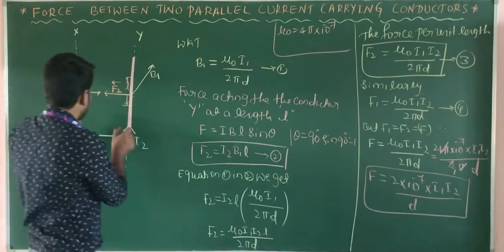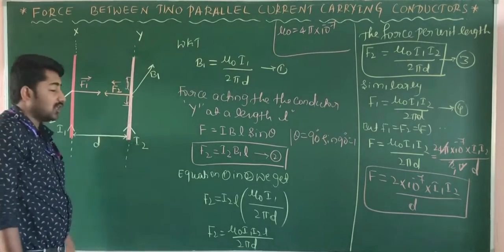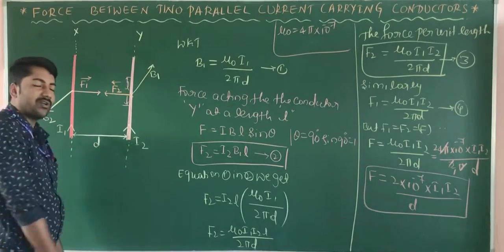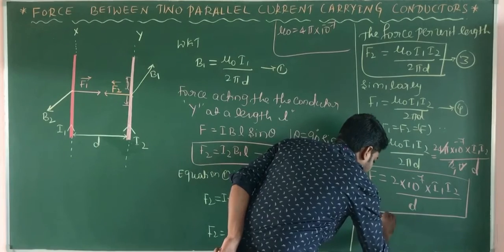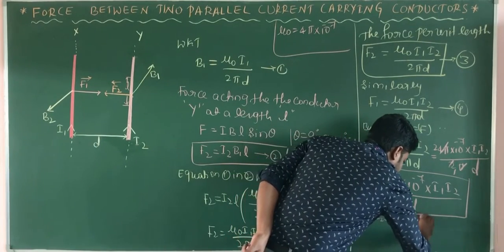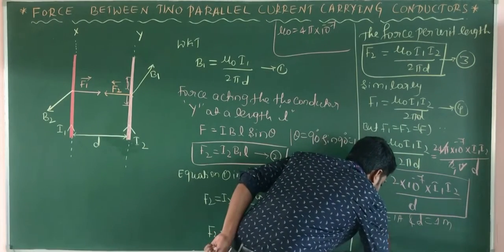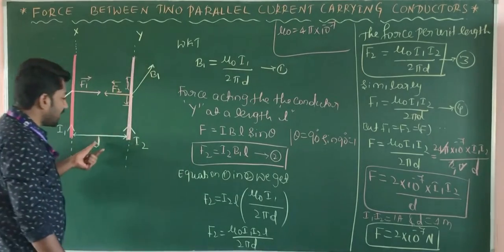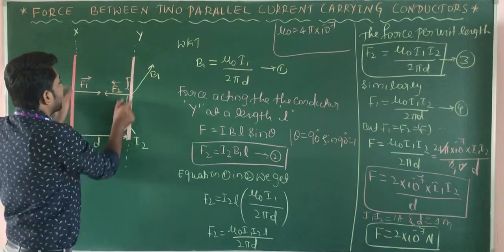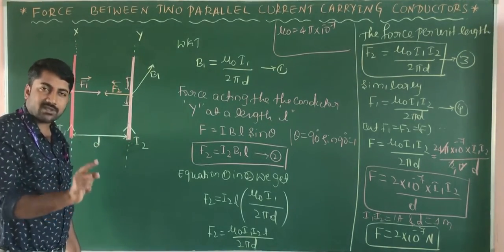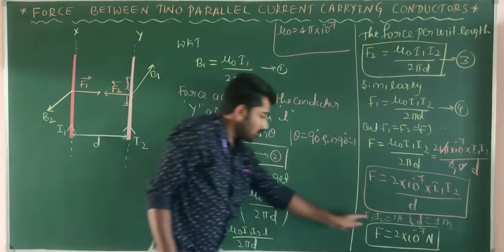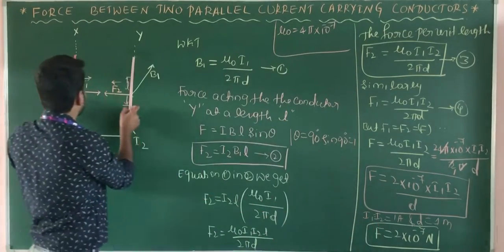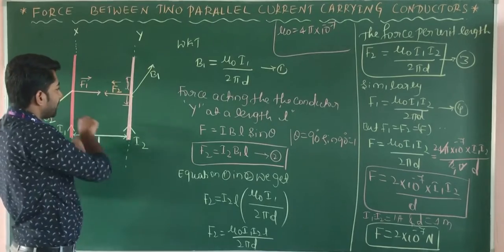If 1 ampere of current flows in each of the two conductors in vacuum, with a separation D = 1 meter, then substituting I1 = I2 = 1 A and D = 1 m, we get F = 2 × 10⁻⁷ N. This means that when 1 ampere flows in both wires 1 meter apart, the force of attraction between the two parallel wires is 2 × 10⁻⁷ newtons.